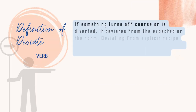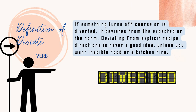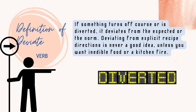Definition of deviate: if something turns off course or is diverted, it deviates from the expected or the norm. Deviating from explicit recipe directions is never a good idea, unless you want inedible food or a kitchen fire.